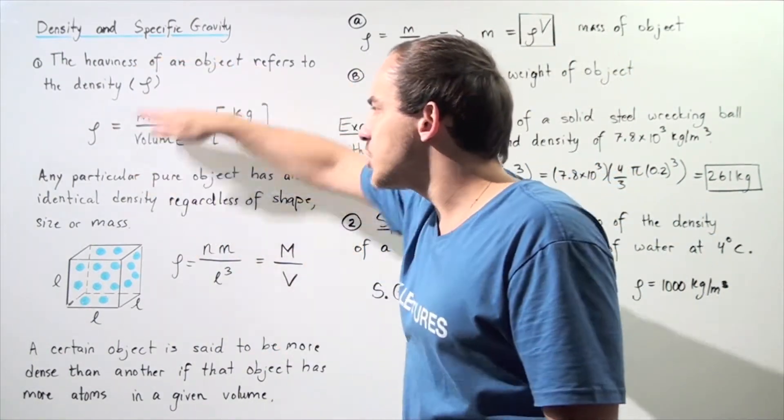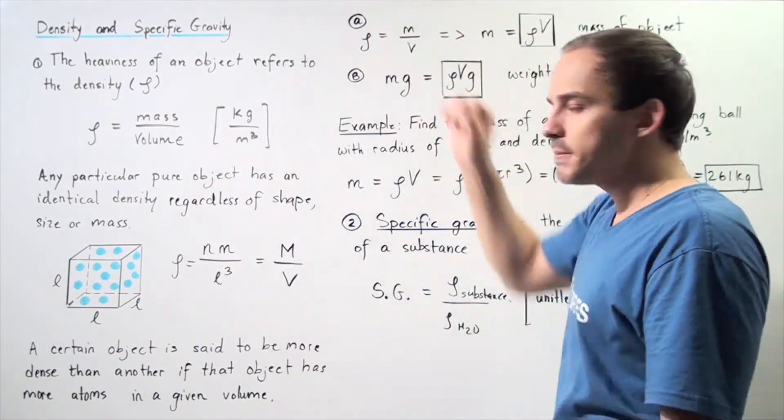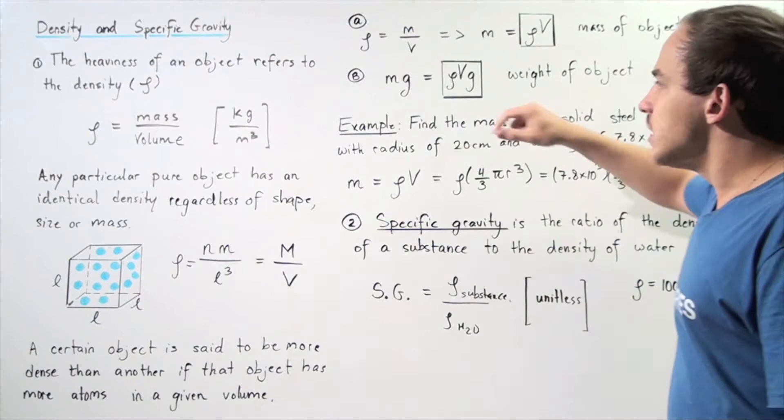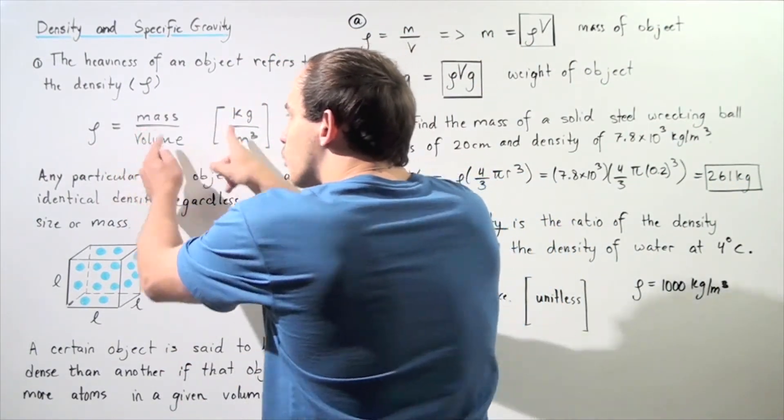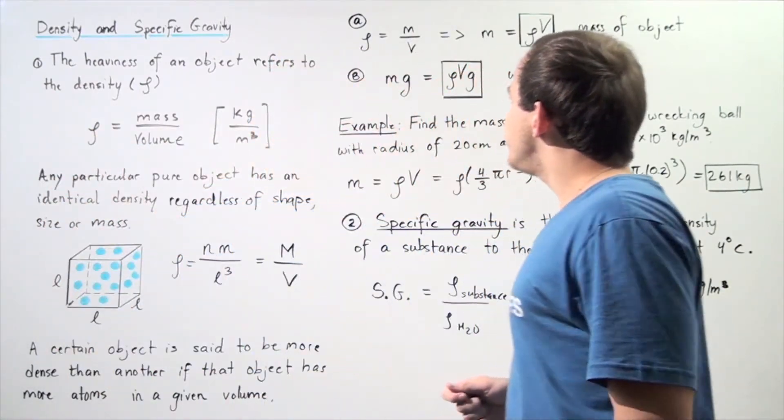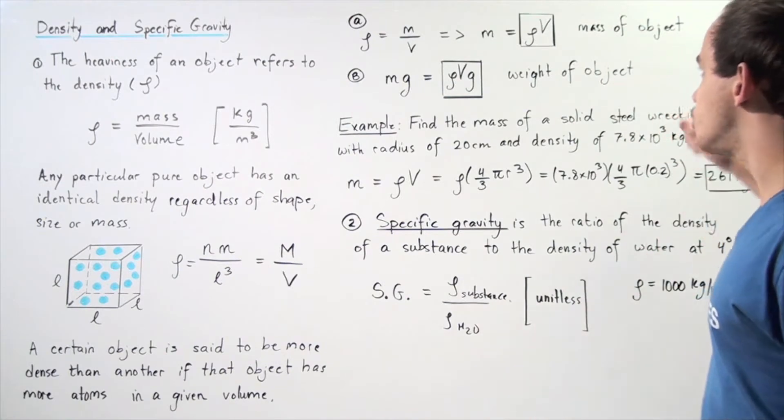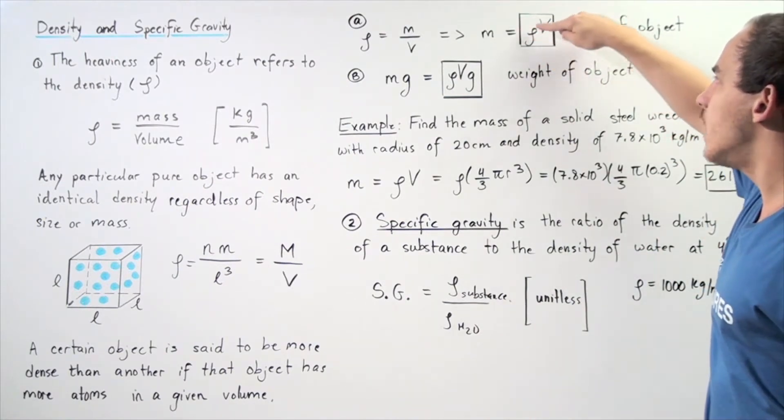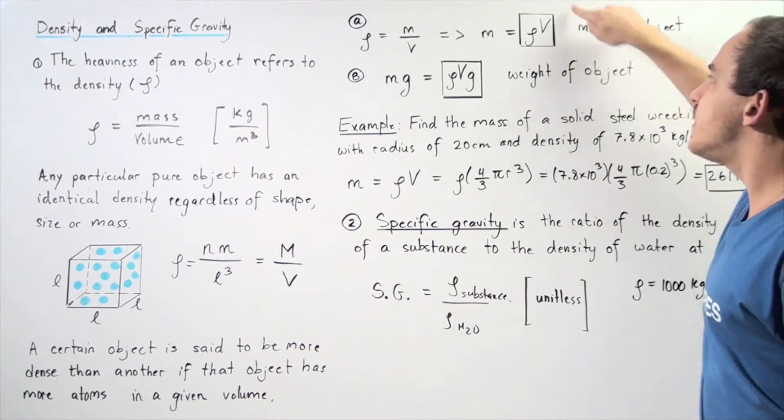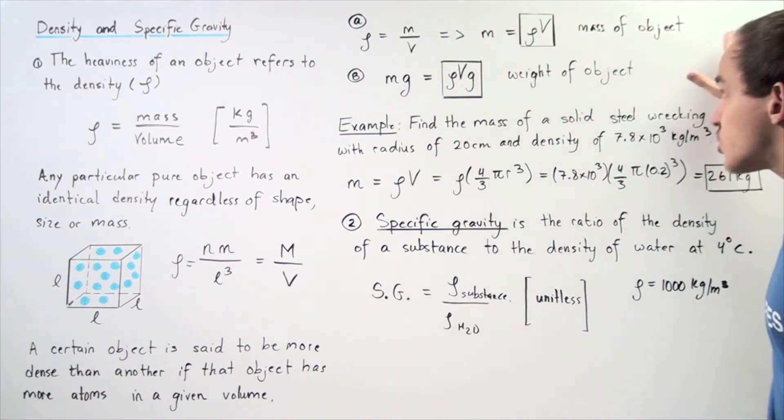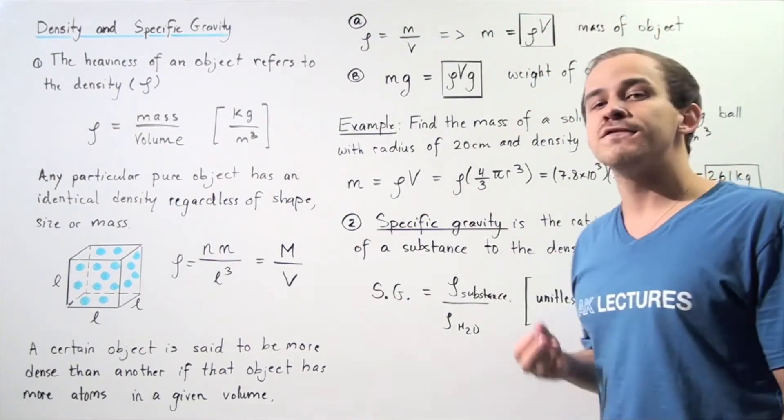From this equation, we can deduce two important equations. In part A, let's suppose we take this equation and bring the volume to the left side. We see that the mass of the object is equal to the density of that object multiplied by the volume. This equation is very useful when considering fluids.